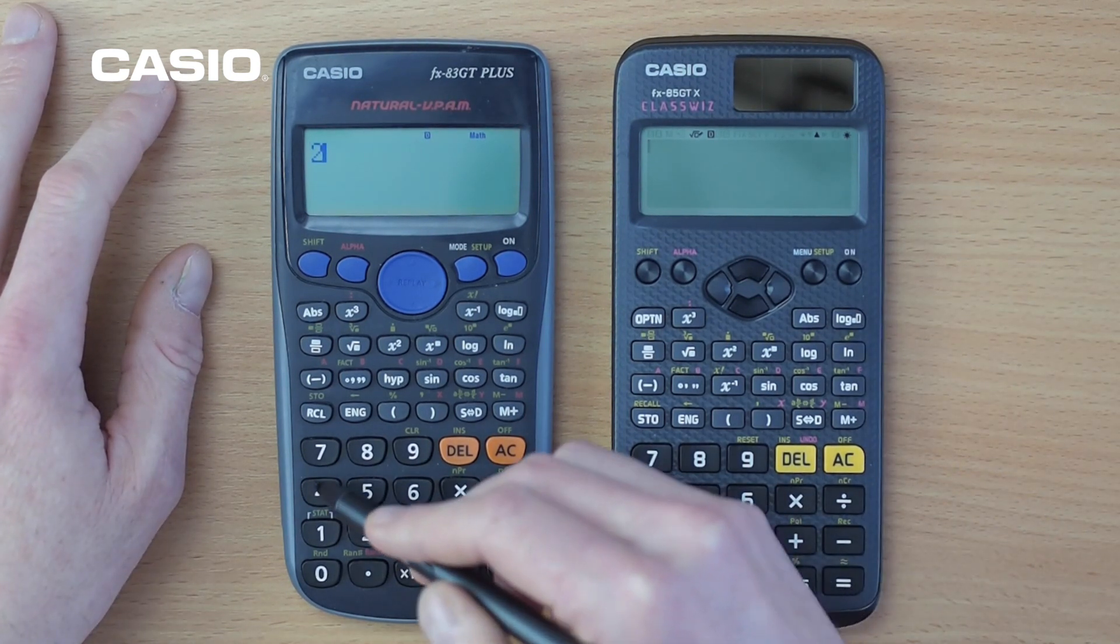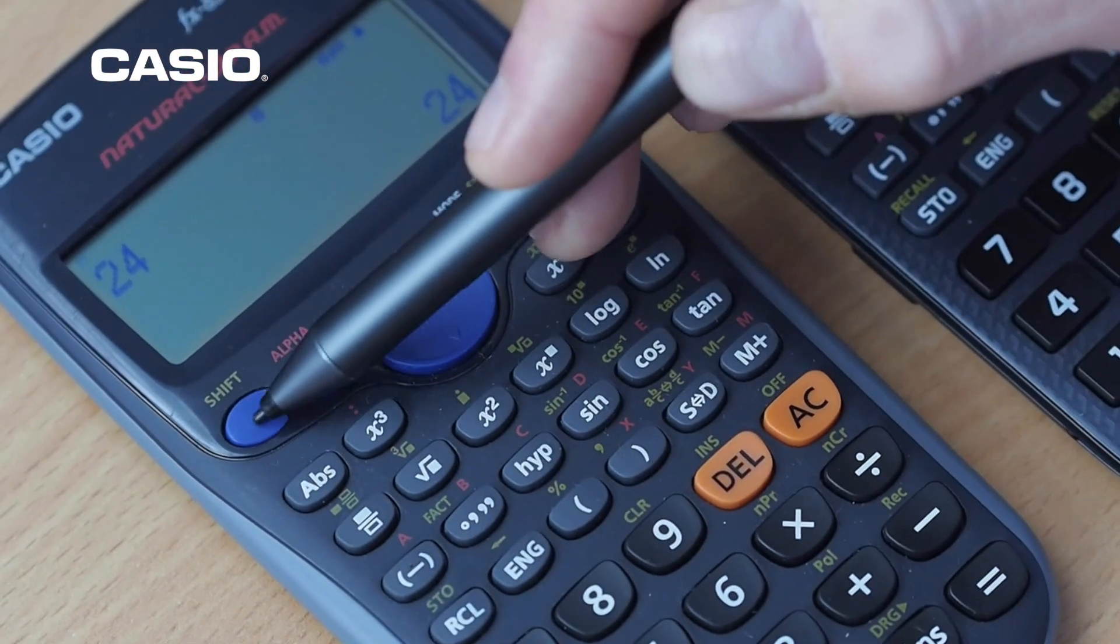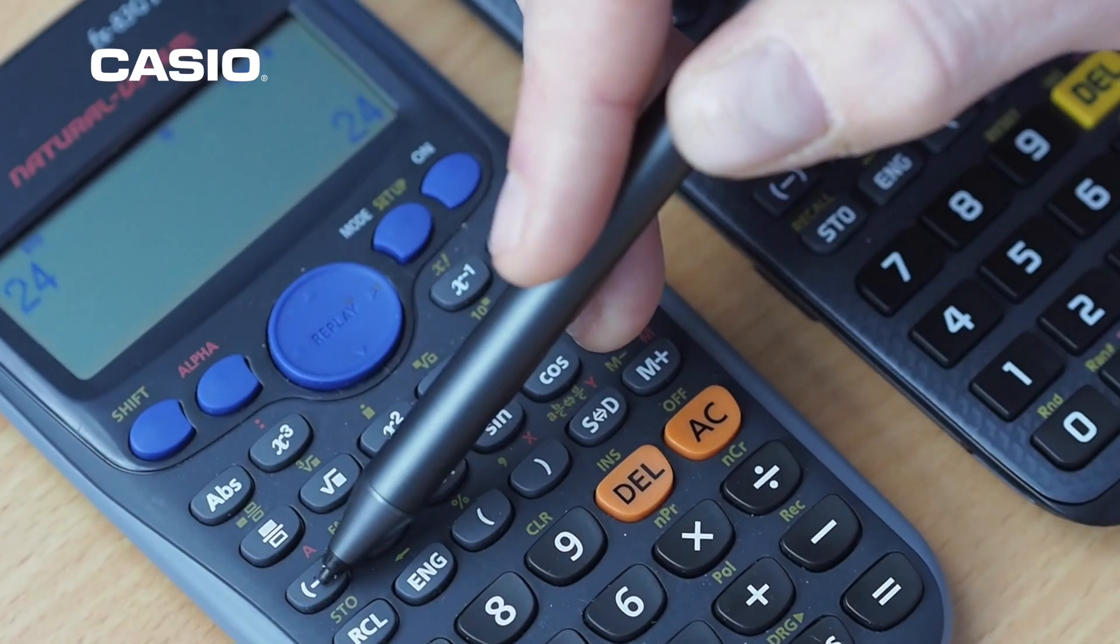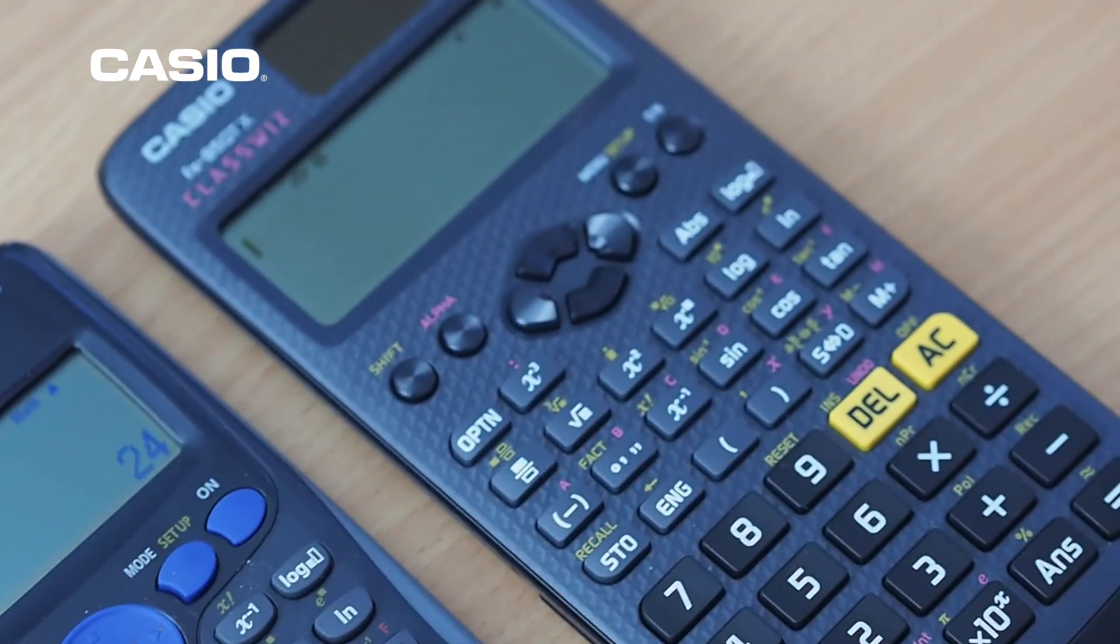If we wanted to store a value in the previous version of the calculator, we had to use this store second function here. So we went store and pressed one of the buttons with a red key above it. So we've got A and now we go stored in memory A.